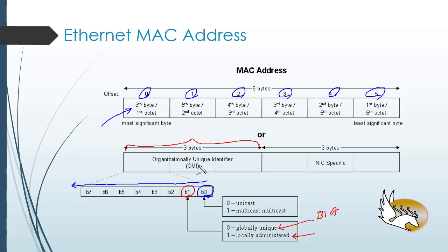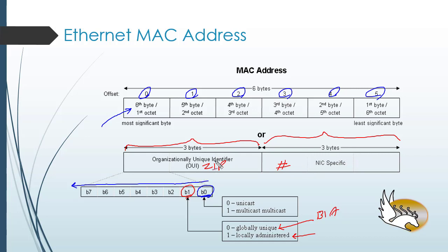The right part — the last three bytes — is where the manufacturer adds its own unique identifier to create a complete MAC address. You can think of the OUI as a zip code for a neighborhood, and the right part as the house number. The zip code identifies the neighborhood, while the house number identifies individual houses within it. So a manufacturer receives its OUI from the authorities and then assigns unique values in the remaining bytes to each device.